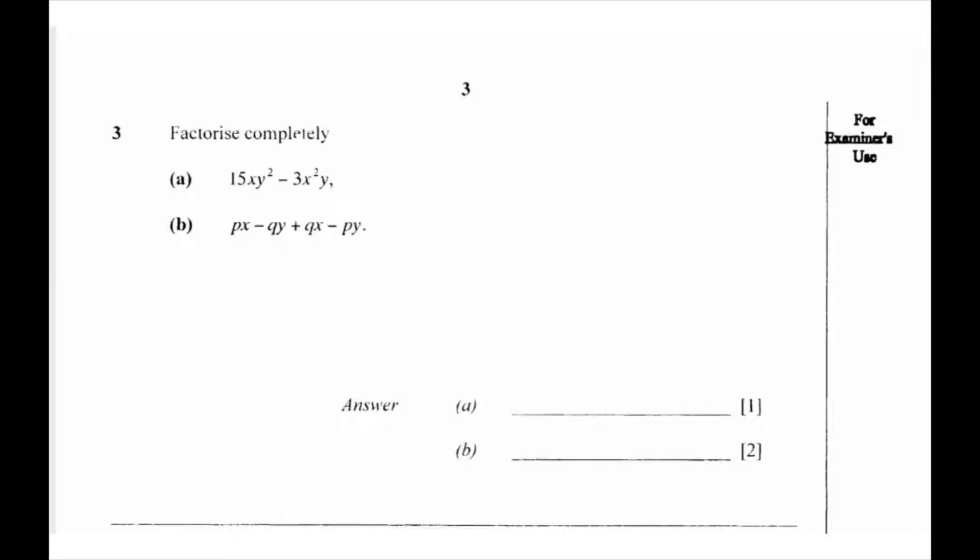We are now on number 3 of the June 2005 paper 1 mathematics. On part A, it asks to factorize 15xy² minus 3x²y. How are we going to solve this?